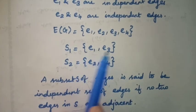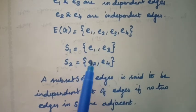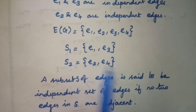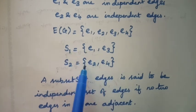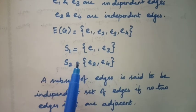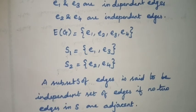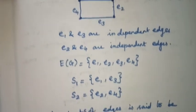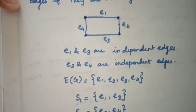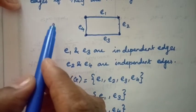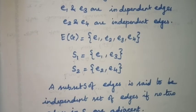E1 and E3 are not adjacent, E2 and E4 are not adjacent. So, this is an independent set of edges for the graph G. For this graph G, we have found two independent sets of edges.